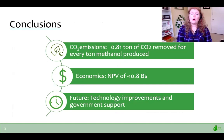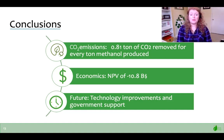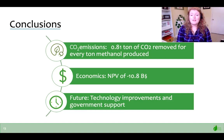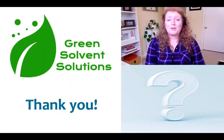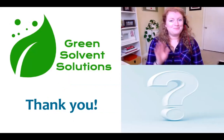Green Solvent Solutions has achieved the goal of designing a power-to-methanol process that produces 1,000 tons of methanol per day that results in a net negative amount of CO2. Our process has the potential to divert 0.81 tons of CO2 for every ton of methanol produced. Unfortunately, the process is not currently economically viable. However, the 15-year projection for electrolyzer technology is promising. For our design to move forward, there needs to be significant improvements to electrolyzer cost and power usage, as well as additional support from the government for truly carbon-negative industries. Thank you to everyone for your attendance and attention. Please feel free to join our chat and ask us some questions.